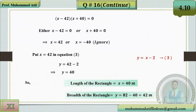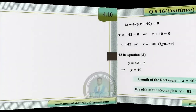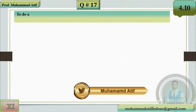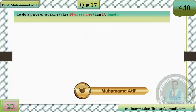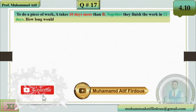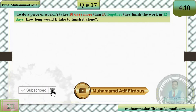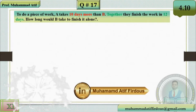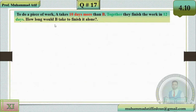Now question number 17: to do a piece of work, A takes 10 days more than B. Together they finish the work in 12 days. How long would B take to finish it alone?